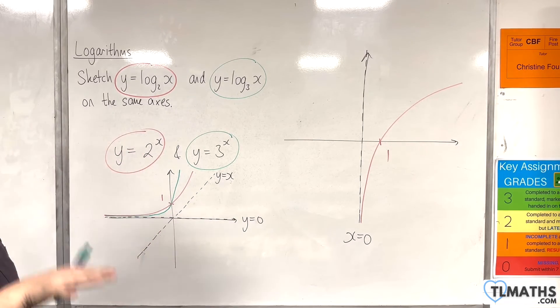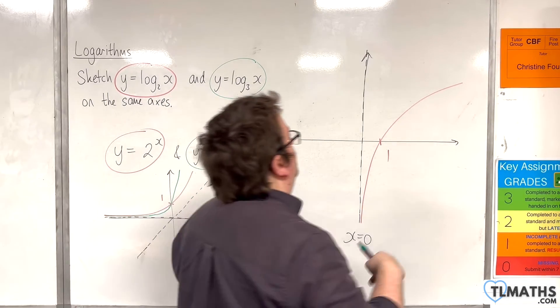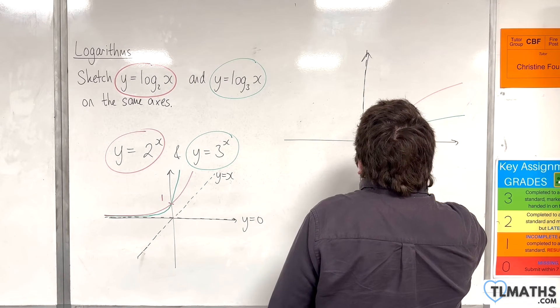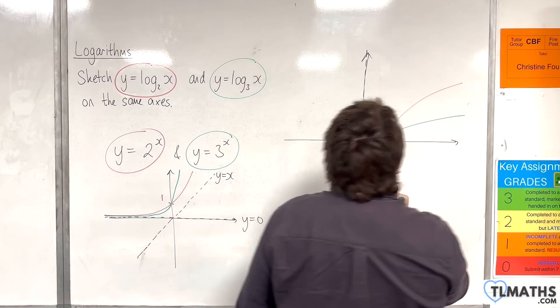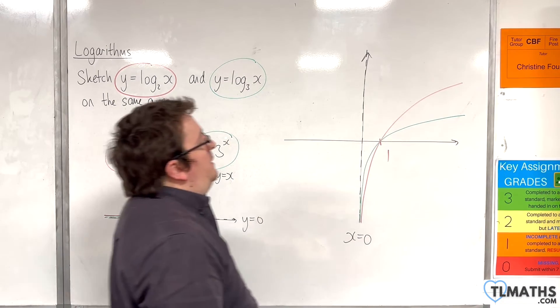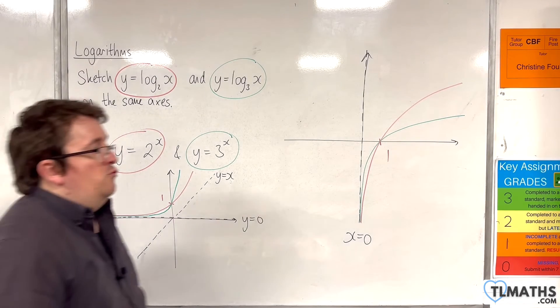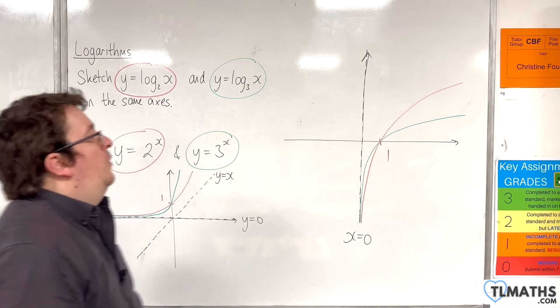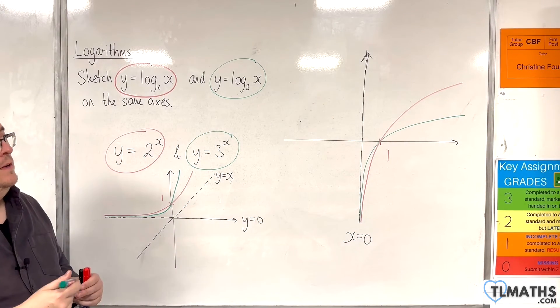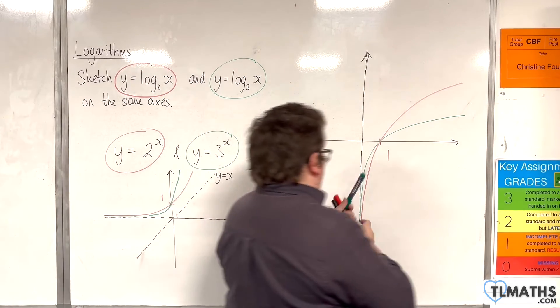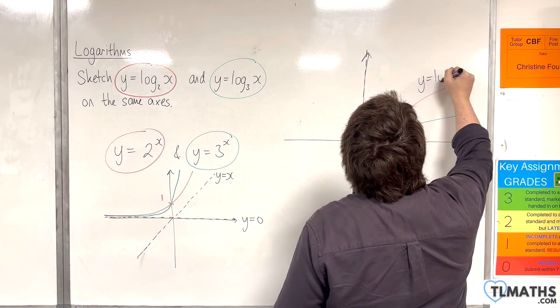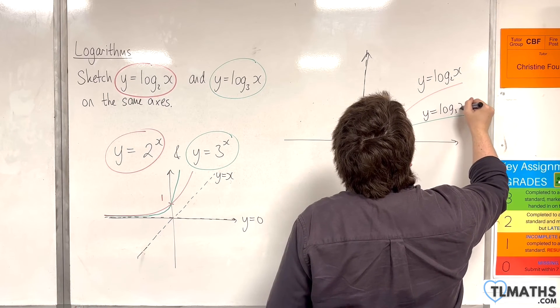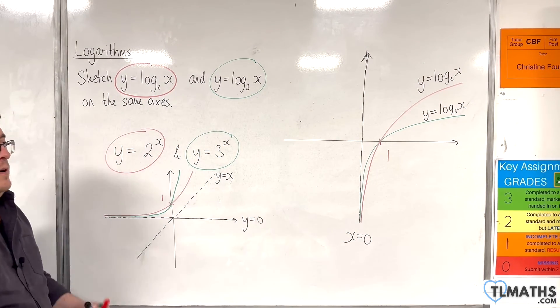So, the green curve is closer to the x-axis than the red curve. So, it would look something like this. So, it's below log base 2 of x to the right of x equals 1 and above it to the left of y equals log base 2 of x. Here we've got y equals log base 2 of x and here is y equals log base 3 of x. And so, that's what they look like side by side.